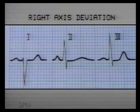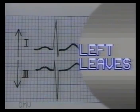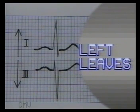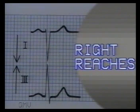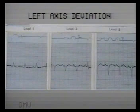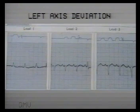To avoid confusion, remember a simple mnemonic: left leaves and right reaches. Imagine lead 1 above and lead 3 below — the QRS complexes seem to leave one another in left axis deviation (left leaves), and seem to reach each other in right axis deviation (right reaches). This ECG shows left axis deviation, which is seen in left ventricular hypertrophy, left bundle branch block, and inferior wall infarct.